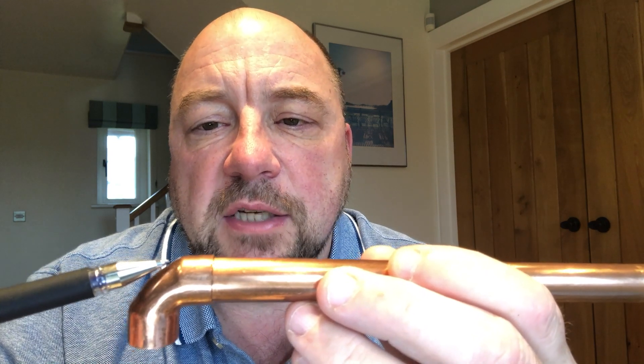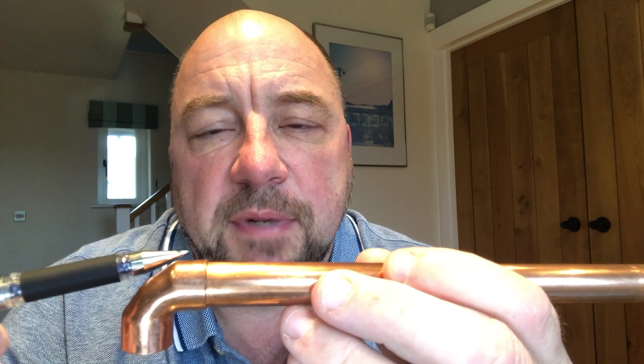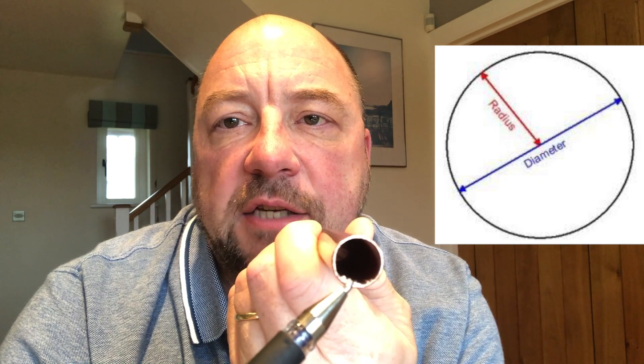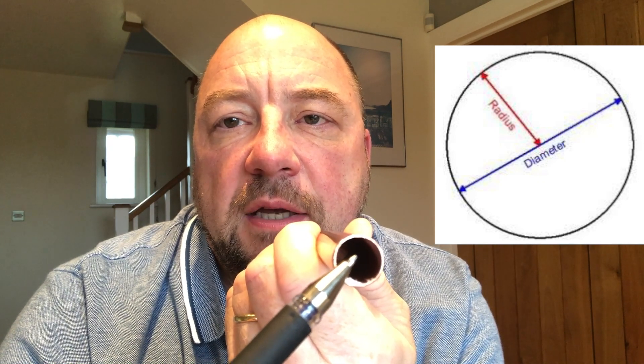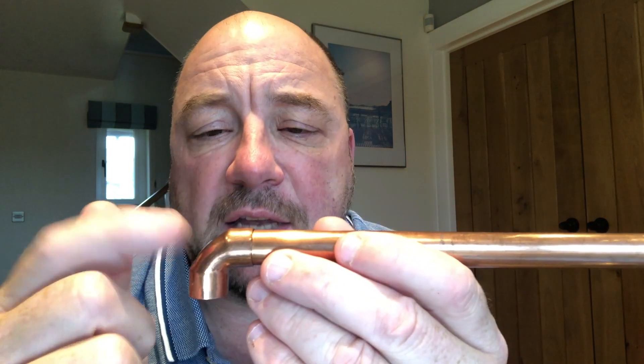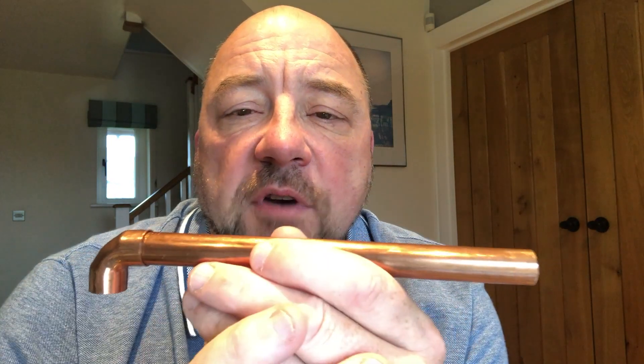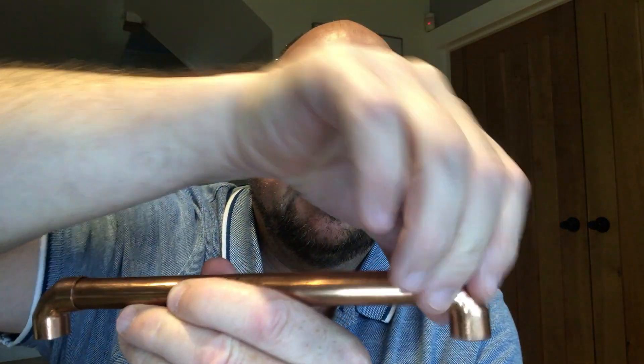If you've got one elbow or one T and you're going to do all your jobs with that particular type of fitting, you only have to measure it once. In this situation, sometimes it's actually just the radius of the pipe. We've got 15mm diameter, and the radius is from the center to the edge, so it's half the diameter effectively. Normally they would be 7.5mm, but in this particular fitting, it's actually nine millimeters.